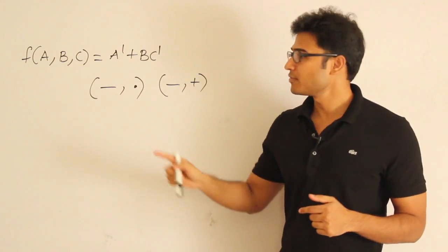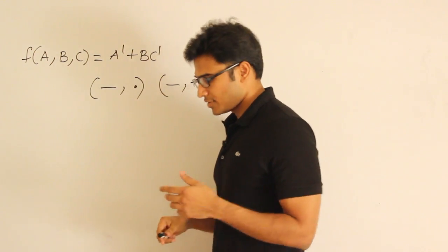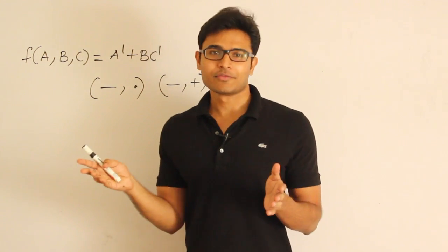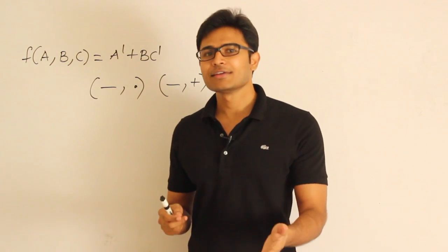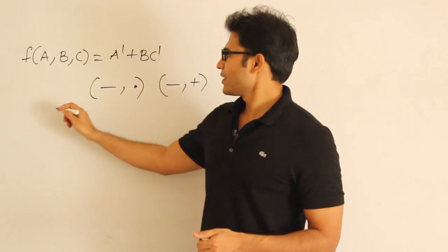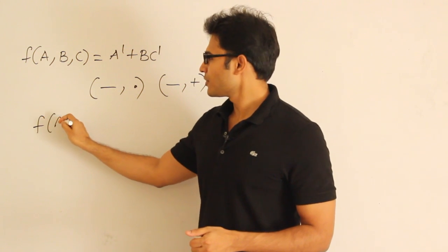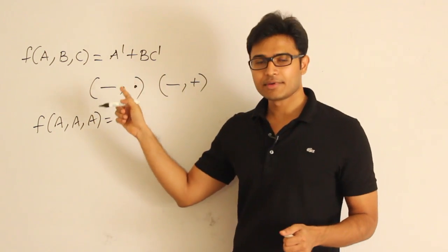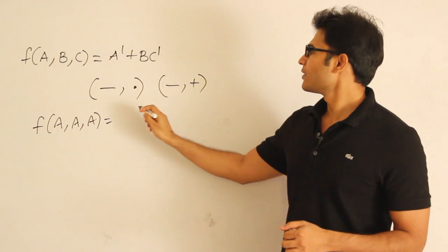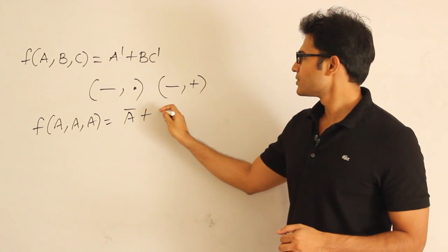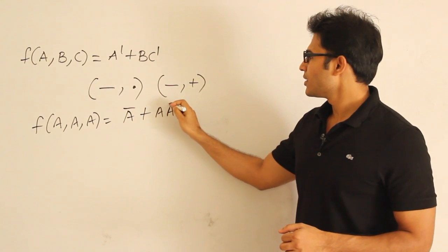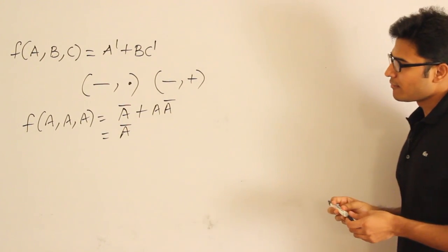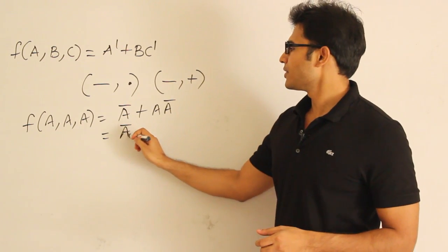Now how can you derive the complement from this? Always remember one thing that helps: whenever such a function is given, substitute everything to be one variable — it generally turns out to be easy. So if I have f(a, b, c), you try to put f(a, a, a) and check what happens. In place of a, b, and c you put a. Then you get a' + a·a', which is nothing but a'. So we are able to realize the complementation.